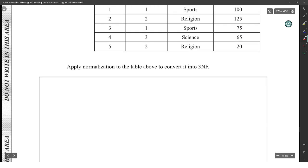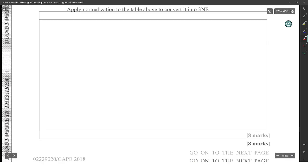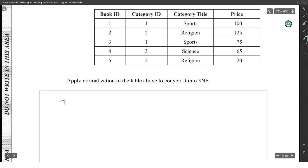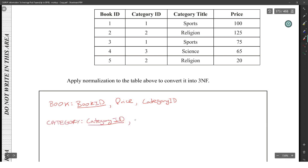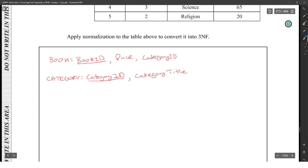Apply normalization to the books table, which has: book ID, category ID, category title, and price. Let's create a book table: book ID as the primary key, price, and category ID. Then a category table: category ID as primary key and category title. The category ID could be the foreign key linking both tables. That's third normal form.